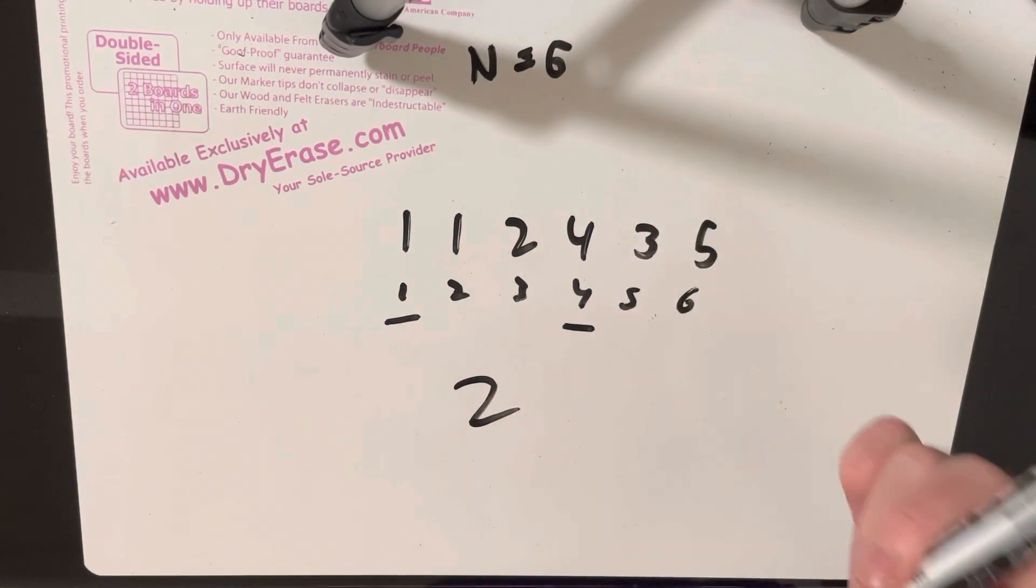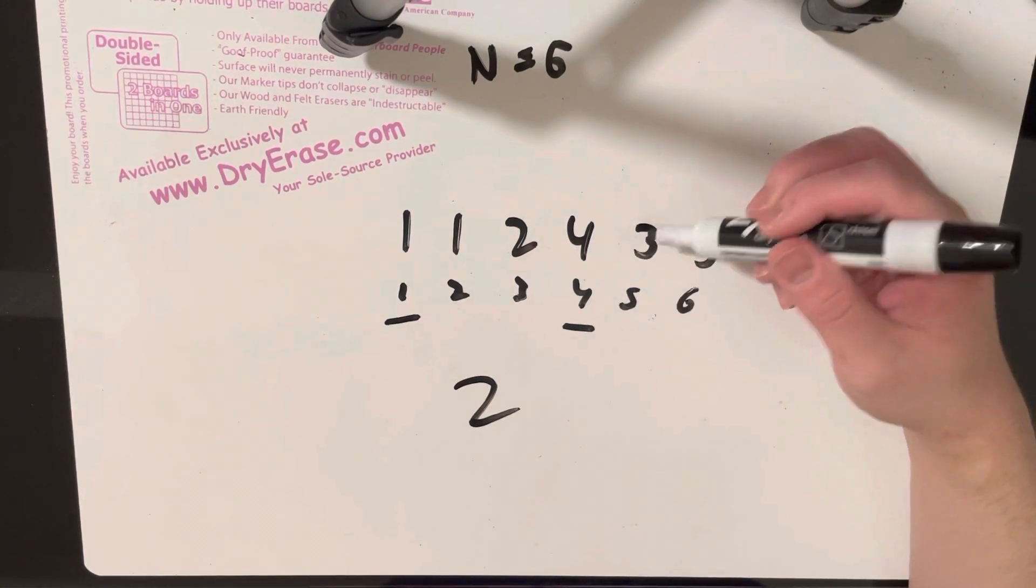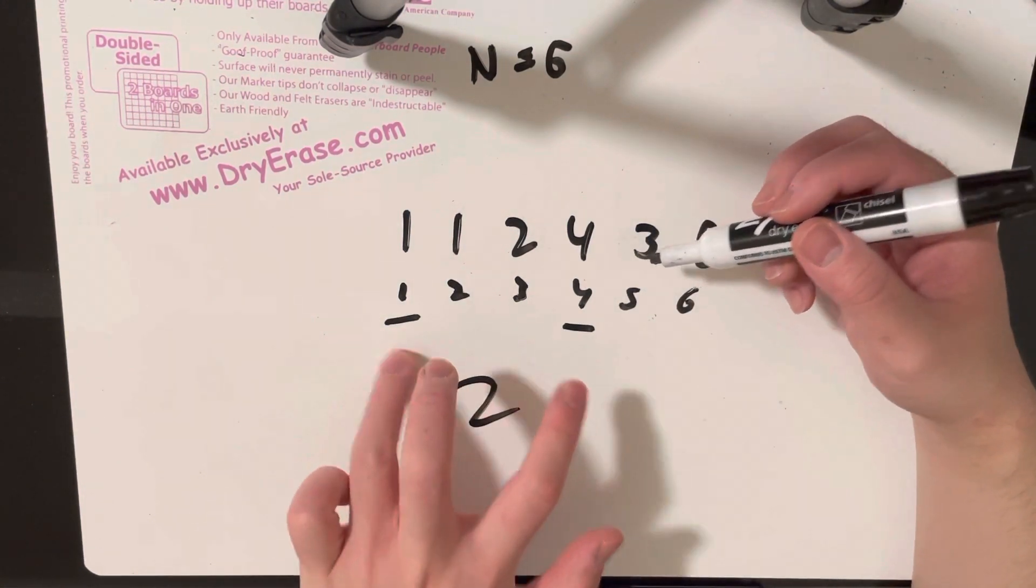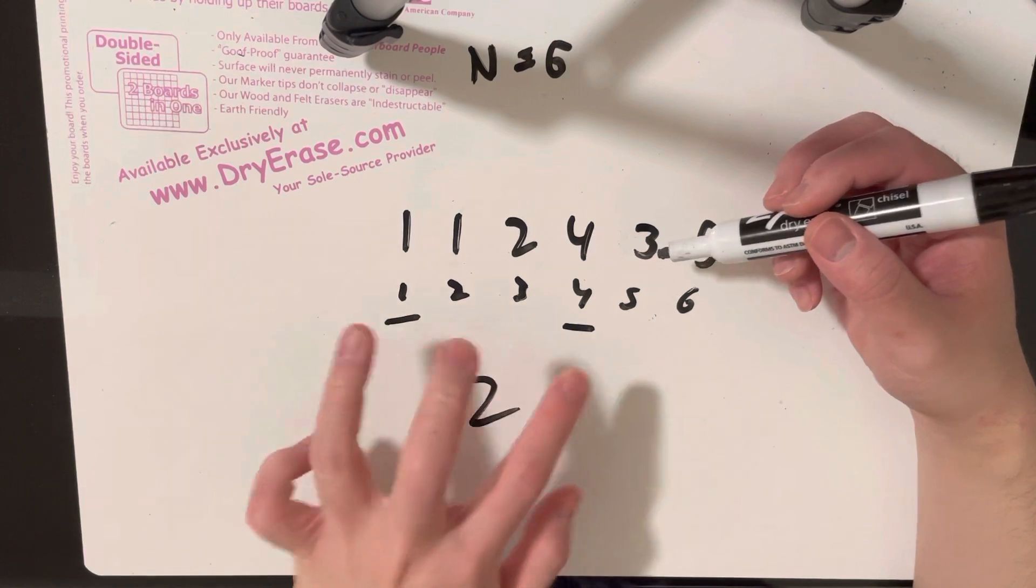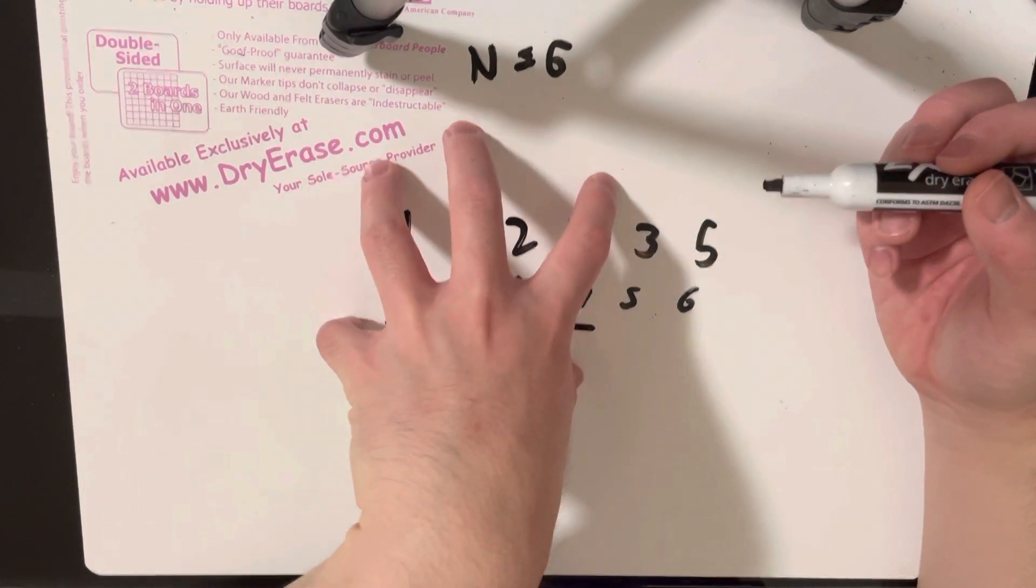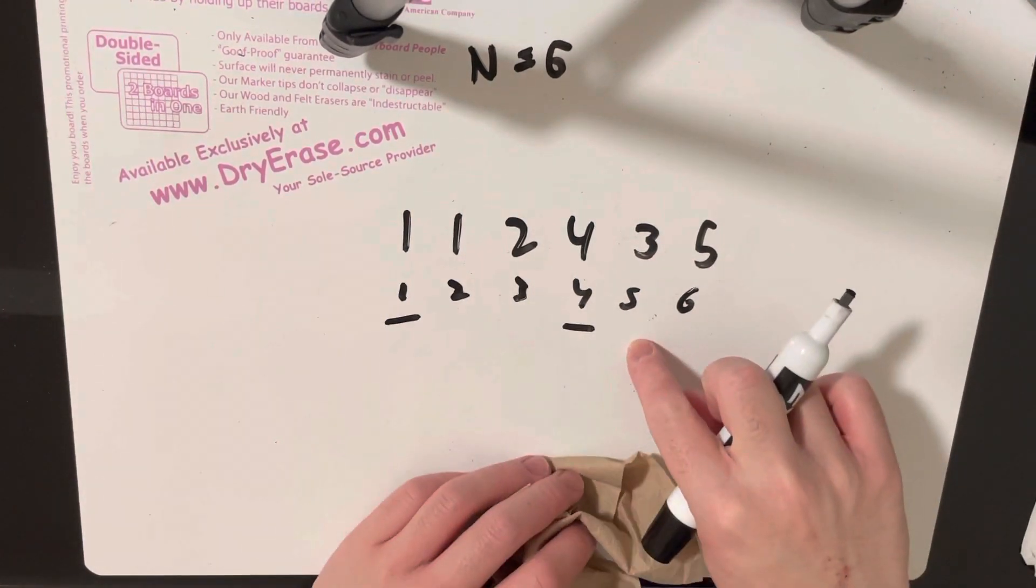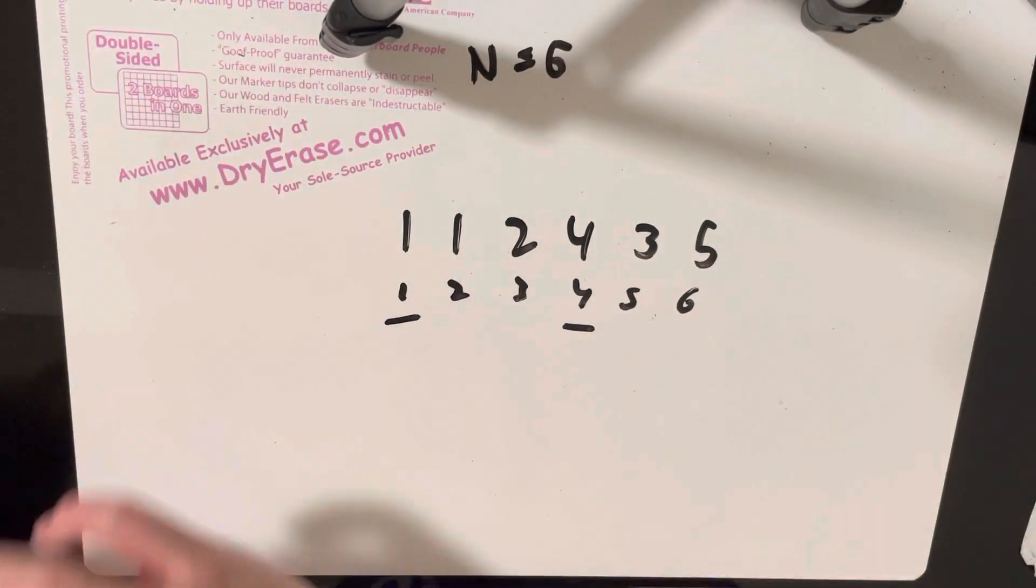So in other words, if we remove the element at index five, because index one and index four are to the left of index five, these positions will not change relatively. So these positions will all stay the same. And all the positions to the right of index five will shift one to the left.